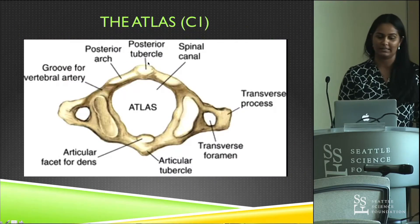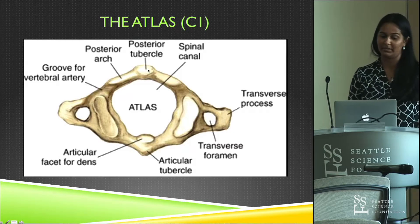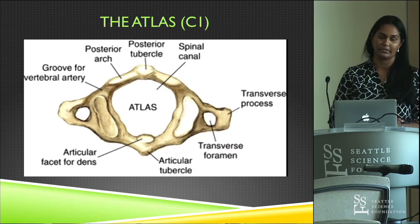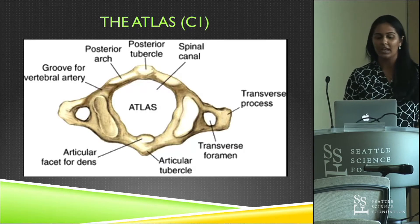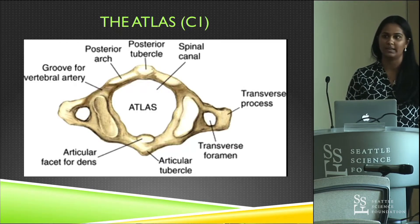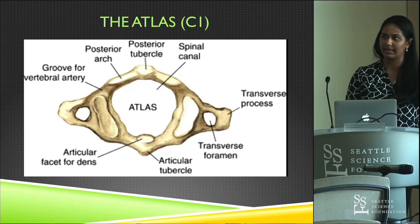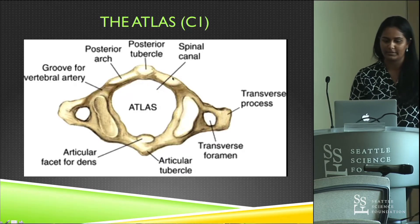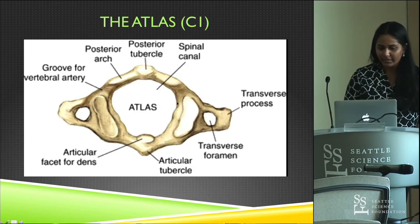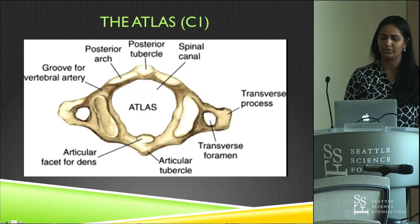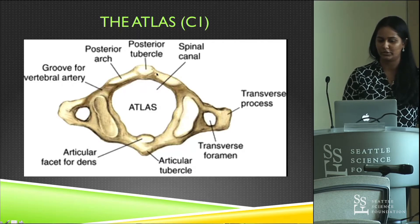Before we go into the split atlas, let's talk about the normal anatomy of the atlas. The atlas is also called your first cervical vertebra, also known as C1, and its main function is to support the weight of the skull as well as to allow a great degree of movement between your head and your neck at your atlantooccipital joint. Looking at this schematic drawing of the atlas, you can see it's classically ring-shaped, and what makes this bone unique is that it lacks a vertebral body compared to the rest of the vertebrae.